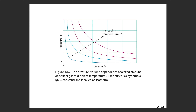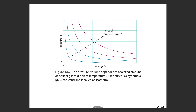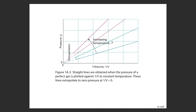In a slightly different view, we plot pressure as a function of one over volume for different values of temperature. Since the x-axis is one over volume, you wind up with a linear relationship. In the previous plot with pressure directly versus volume, you get hyperbolas; doing it this way gives a linear curve.